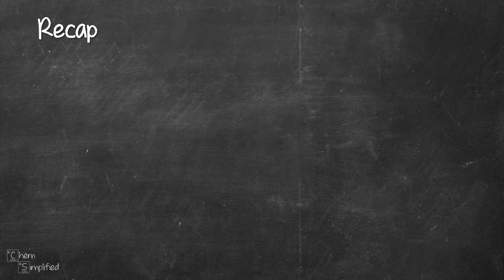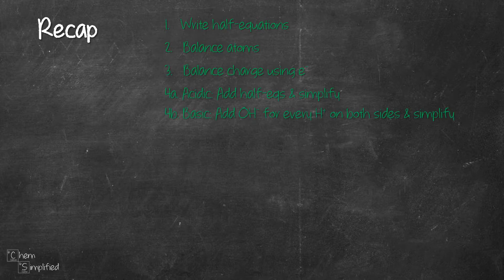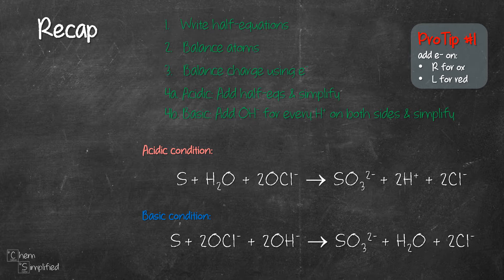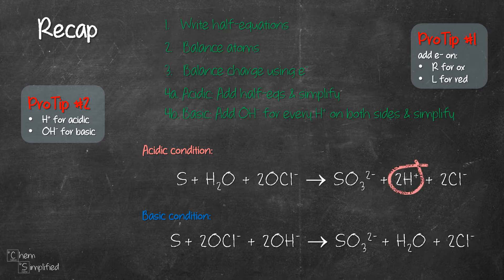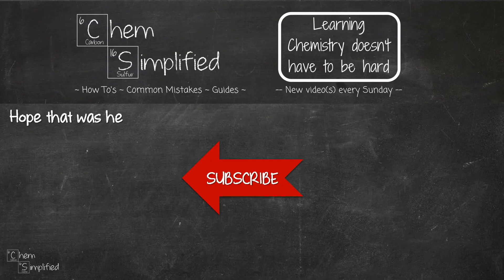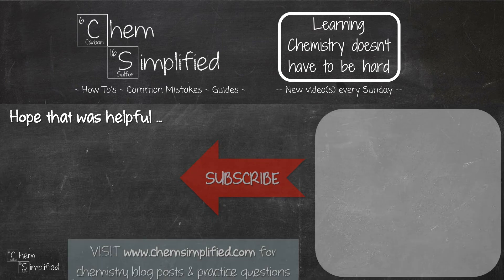To recap, we went through these 4 steps in balancing the redox equation in acidic and basic condition. When adding electrons in step 3, add them to the right-hand side for oxidation and the left-hand side for reduction. For acidic condition, H⁺ should appear in the equation; for basic condition, OH⁻ should appear and there should be no H⁺. Always double-check your final work to make sure you have the same number of atoms and charges on both sides. I hope the 4 steps in balancing the redox equation were helpful — do subscribe and thanks for watching!